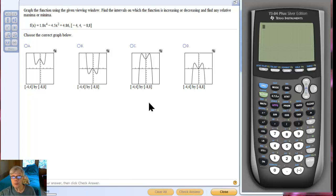Here's your first problem and yours will say something like this. We have f(x) = 1.8x^4 - 4.5x^2 + 4.86 and we're told what the window setting should be. So the first thing I'm going to do is click on window and I'm going to change to these settings.